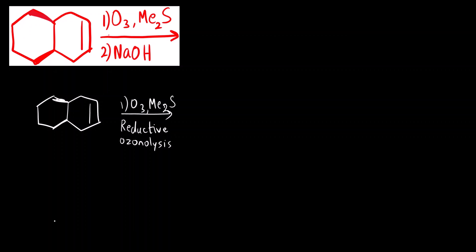We will understand why this is called a reductive ozonolysis. How do you do the ozonolysis reaction? This double bond will break and will add oxygen on both the sides. Here there is hydrogen, here there is hydrogen. So we will get a dialdehyde.